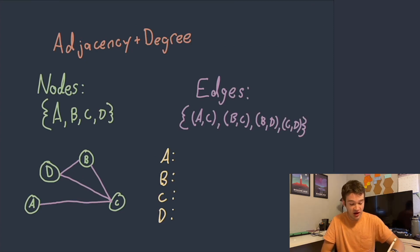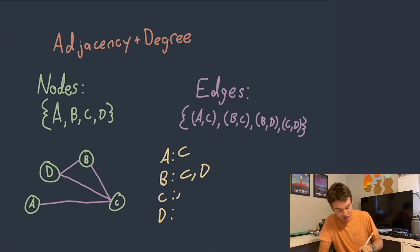So adjacency is very simply the idea of whether two things are next to each other. So for example in this graph right here we can see that A is going to be adjacent to C because they're connected. B is going to be adjacent to both C and D because it's connected to both of those. C is going to be adjacent to A, B, and D. And D is going to be adjacent to B and C.